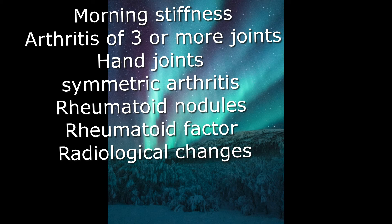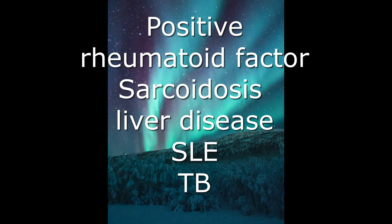Patients with high titres of rheumatoid factor generally tend to have a poorer prognosis and more extra-articular manifestations. Remember also that there are other causes of a positive rheumatoid factor, such as sarcoidosis, systemic lupus erythematosus, chronic liver disease, and infections like TB. You need to be aware of this when interpreting the rheumatoid factor.